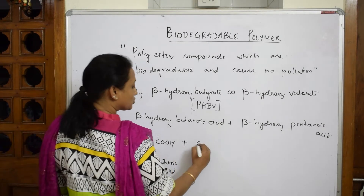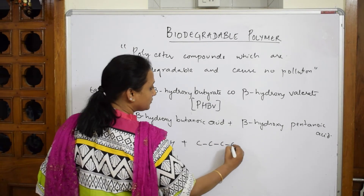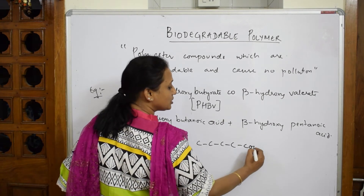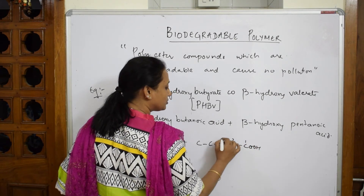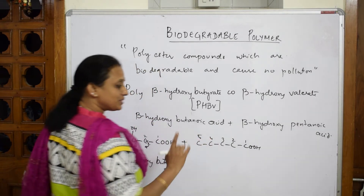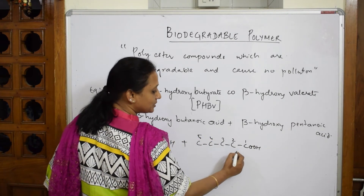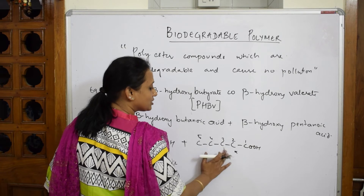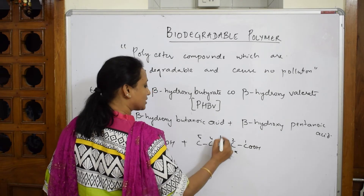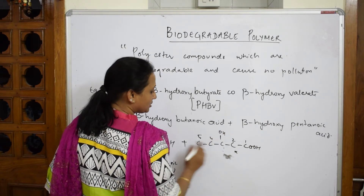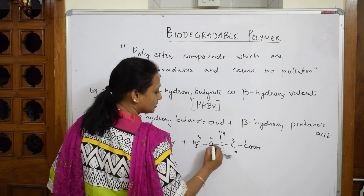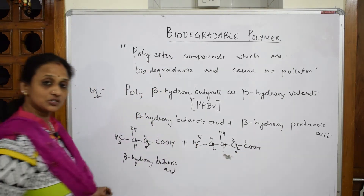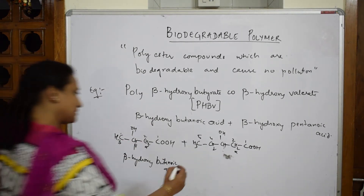Next, we add beta-hydroxy pentanoic acid: one, two, three, four, five carbons, with COOH at carbon one. Carbon two is the alpha carbon and carbon three is the beta carbon, where we write the OH group. Filling in the hydrogens: three here, two here, one here, two here. This is beta-hydroxy pentanoic acid — five carbons.